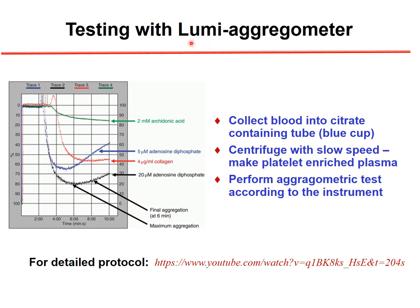For the Lumi aggregometer, blood is collected into a citrate-containing tube (blue cap). After slow-speed centrifugation, platelet-enriched plasma is prepared and aggregation tests are performed using different agonists that stimulate platelets through different pathways.